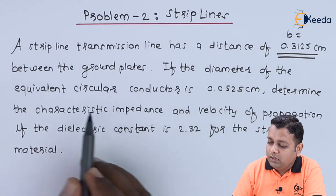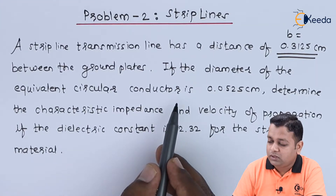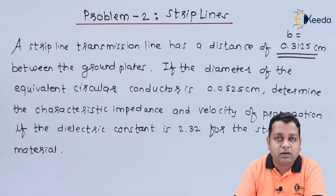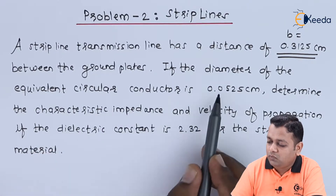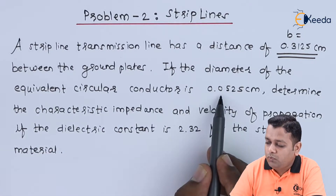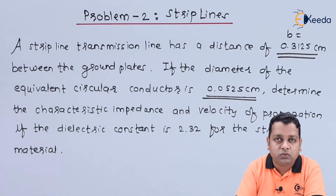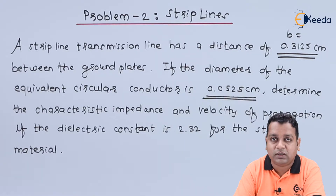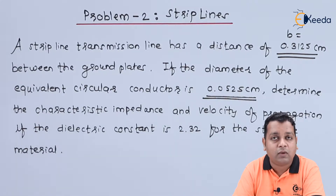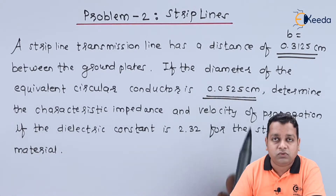The diameter of the equivalent circular conductor — with respect to the central conductor, we have a circular cross-section with diameter 0.0525 centimeters. We need to apply a modification from the coaxial transmission line to the strip line having a central conductor with a circular cross-section, and accordingly use the appropriate formulation.